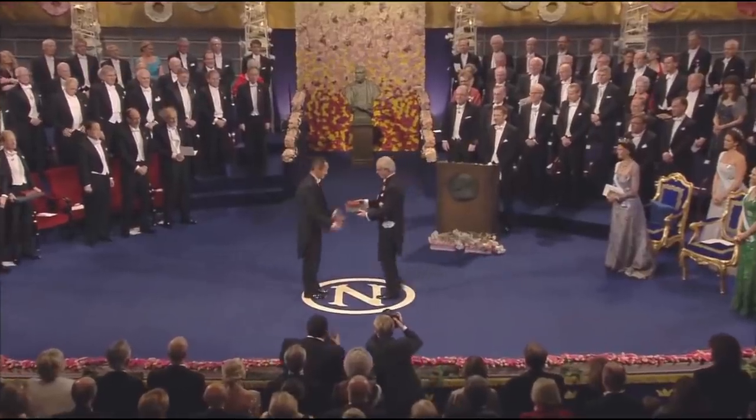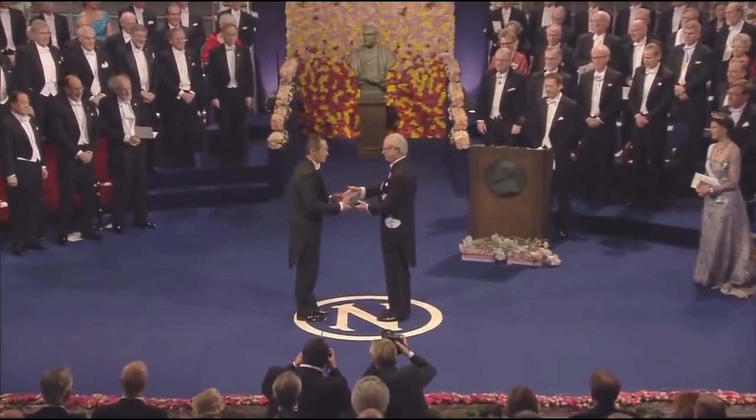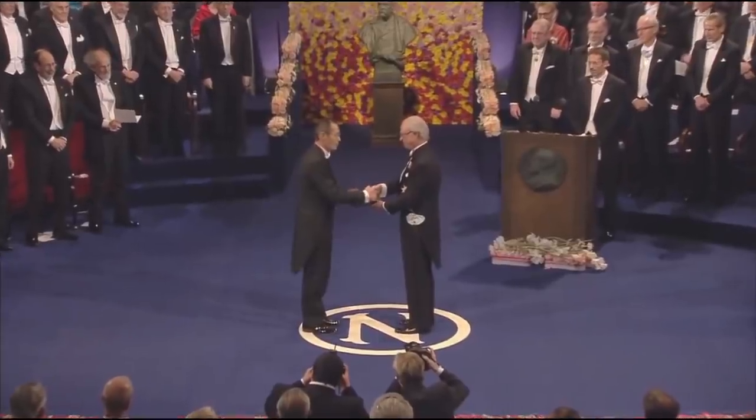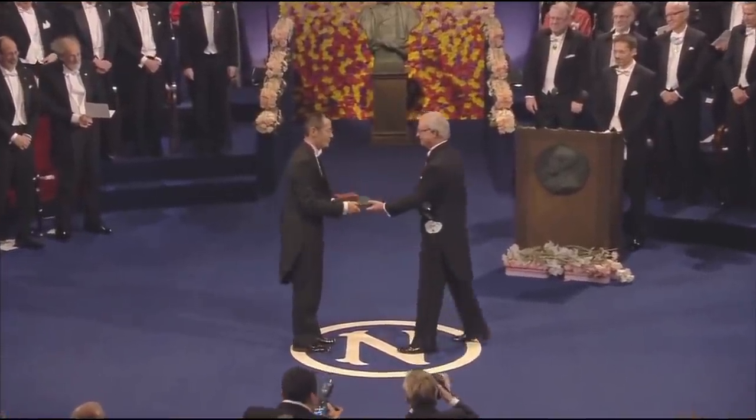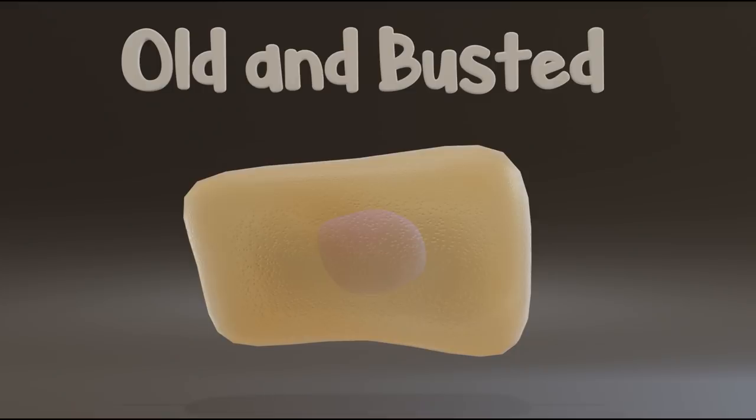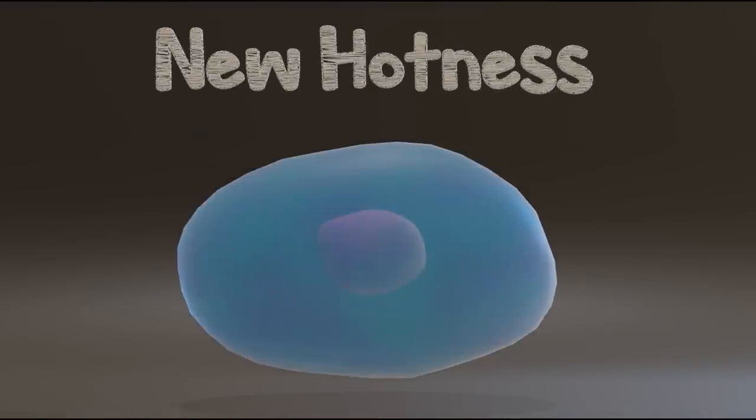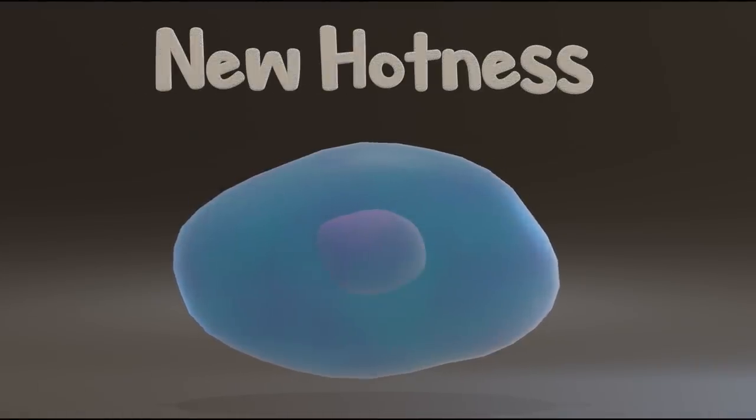And in 2012, Shinya Yamanaka won the Nobel Prize for showing that adult skin cells could be converted into pluripotent stem cells, proving cells could be youthful again. So if no genetic information is lost, what causes aging?